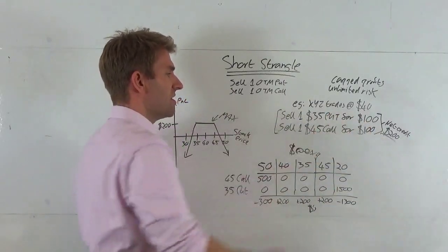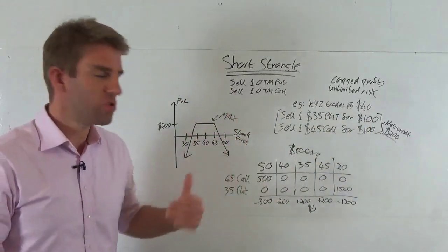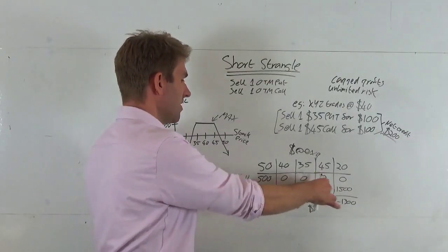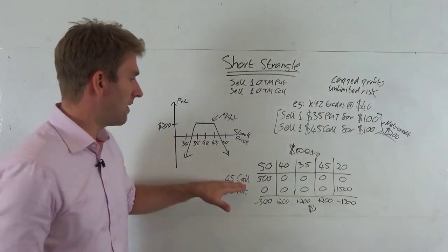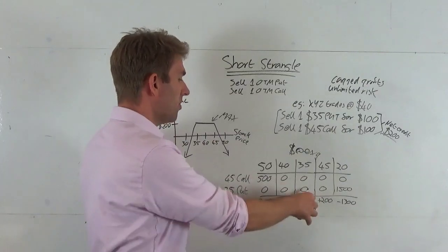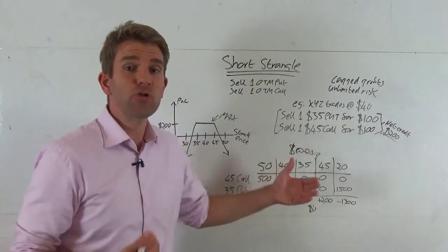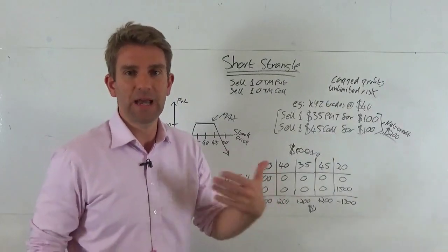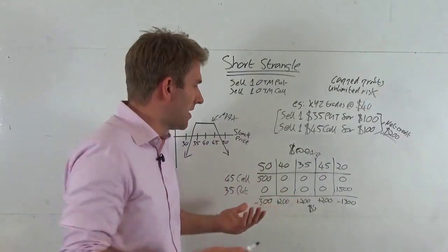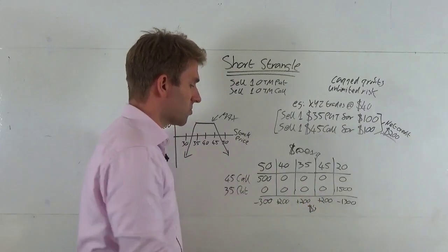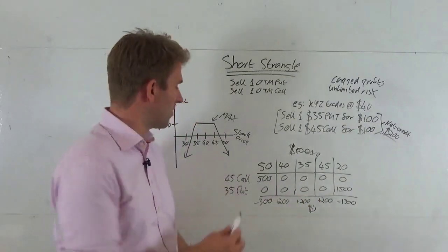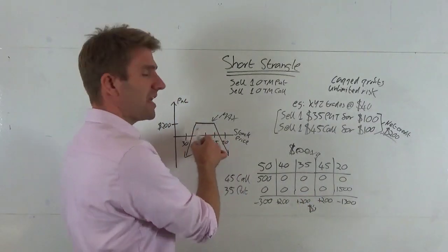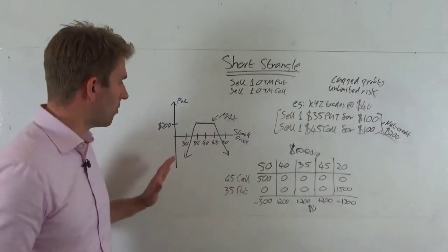Worth zero, zero. You get the full $200 credit. Don't forget you sold that for $100, you sold that for $100, now worth zero, you've got $100 plus $100, $200. It's the same for $35 and $45 because you've got a $45 call, the value of the call is zero, the value of the put is also zero because even though it's at the strike you still have no intrinsic value. The right to sell something at the same price, there's no value in that.